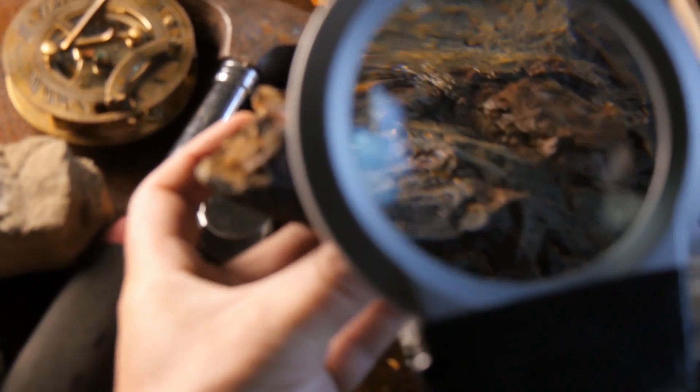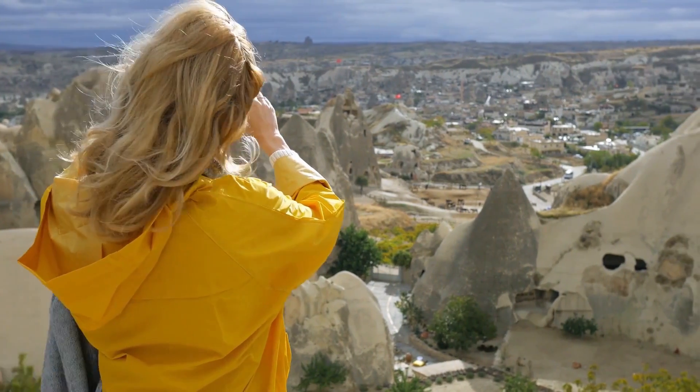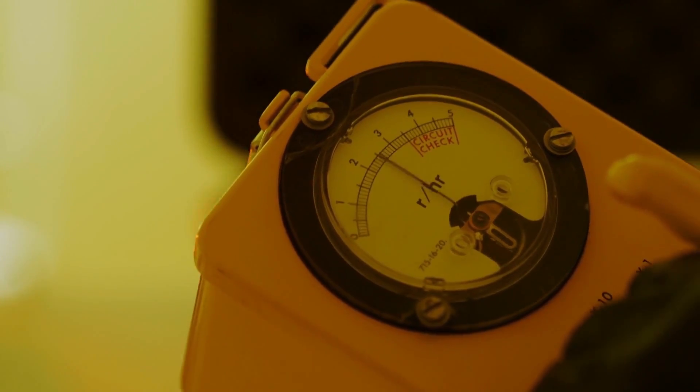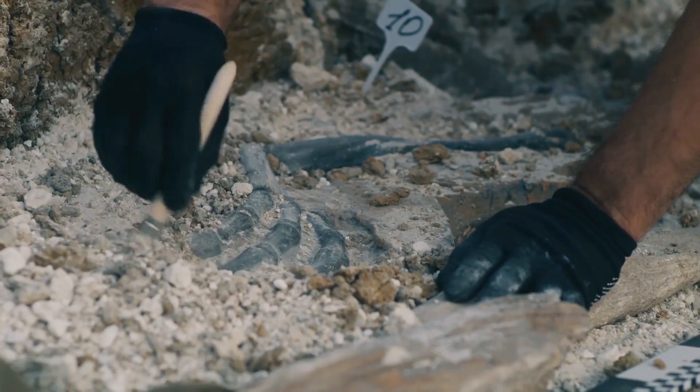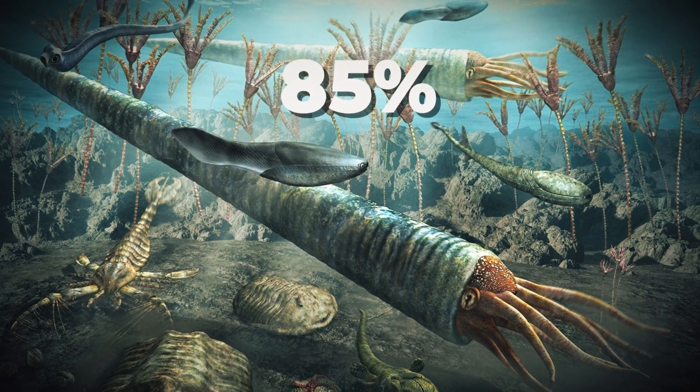Geological evidence suggests that something similar may have happened around 450 million years ago. A gamma ray burst from a nearby supernova could have contributed to the late Ordovician mass extinction, which resulted in the complete annihilation of around 85 percent of all marine species on Earth.